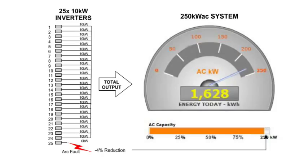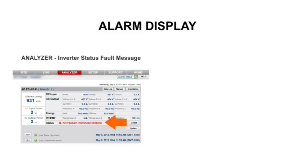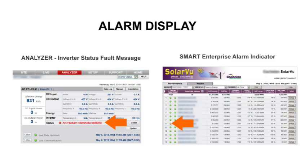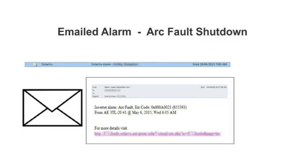SolarView detects the AFCI shutdown condition when it receives a serial communications fault message from the affected equipment. After an inverter detects an arc fault and shuts down, it will stay off until manually reset as required by code. SolarView will detect the fault condition and show an alarm in the inverter status screen and on the Smart Enterprise account to indicate there is a problem at the site. To ensure that the owner is immediately notified, SolarView also sends an alarm email.